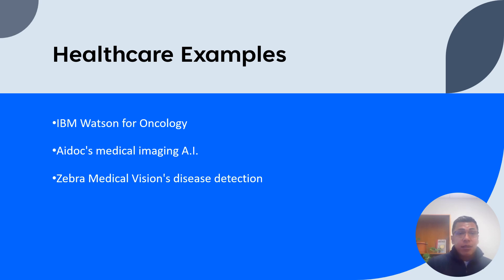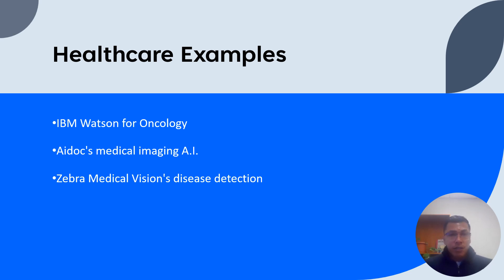Now let's take a look at some real-world examples of AI in healthcare. The first is IBM's Watson for Oncology. This AI-driven system supports oncologists in diagnosing and treating cancer by analyzing patient data and providing evidence-based treatment recommendations. Watson for Oncology has been deployed in multiple hospitals worldwide, helping doctors make better-informed decisions and improve patient outcomes. The second is ADOC's medical imaging AI. ADOC has developed an AI-powered radiology solution that assists radiologists in detecting abnormalities in medical images such as CT scans, by quickly and accurately identifying issues. ADOC's solutions can help expedite diagnosis and treatment for patients.